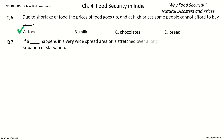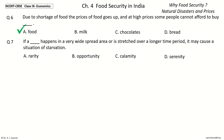Question 7: If a dash happens in a very widespread area or is stretched over a longer time period, it may cause a situation of starvation. The options are: rarity, opportunity, calamity, serenity. And the answer is calamity. So, if a calamity happens in a very widespread area or is stretched over a longer time period, it may cause a situation of starvation.